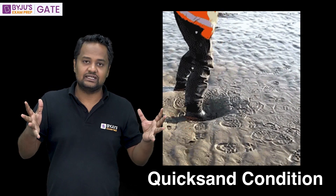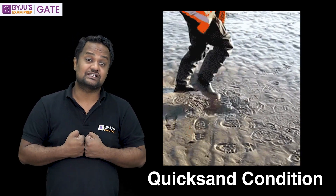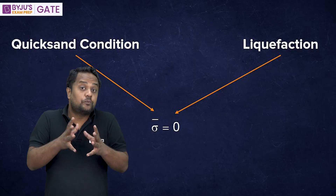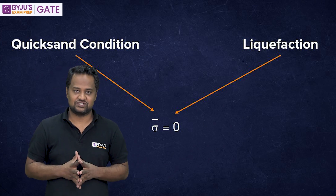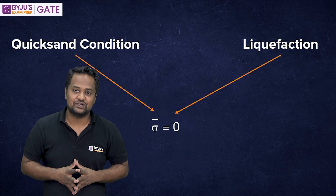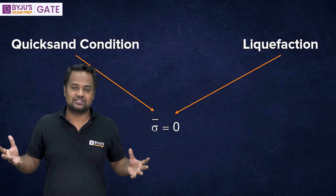Now, let us discuss about when the net effective stress will be zero. Net effective stress zero in the case of sand means there is no bonding between the particles, and in such cases the particles are in a floating condition, as you can see in this small clip. Effective stress is zero, so there is no contact force between the particles.